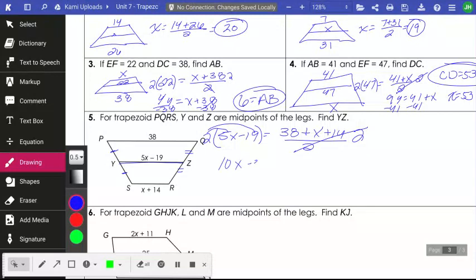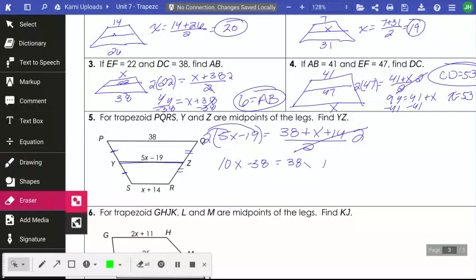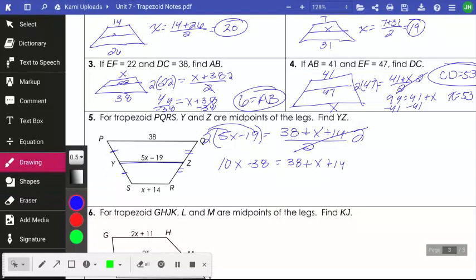so I'm going to have 10X minus 38 is equal to 38X plus, oh, sorry, not 38X plus 14, but 38 plus X plus 14. Okay, and so then what I'm going to have to do is I am going to have to move my numbers over to one side and my X's over. So I'm going to subtract X from both sides so I get 9X and I'm going to add 38 to the right and I'm going to combine that 38 and the other 38 and the 14 all together. So I'm going to simplify all those numbers together so that I get 90.